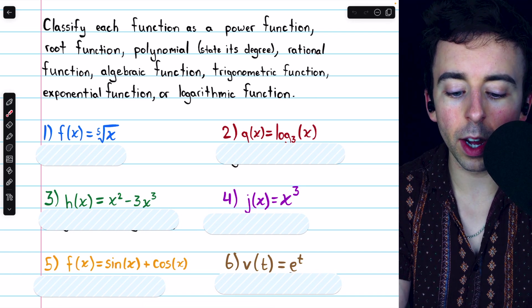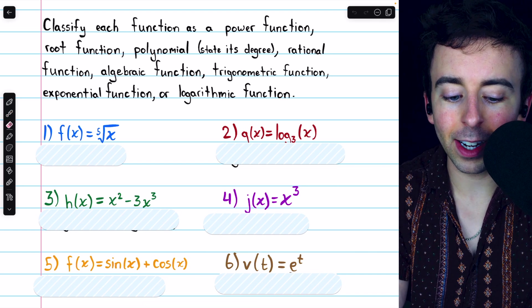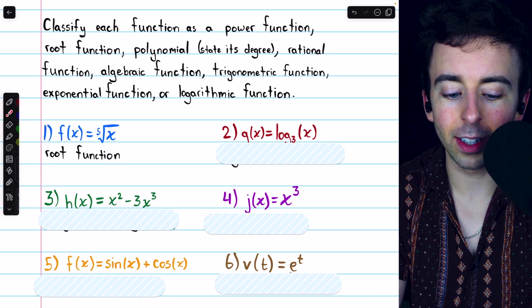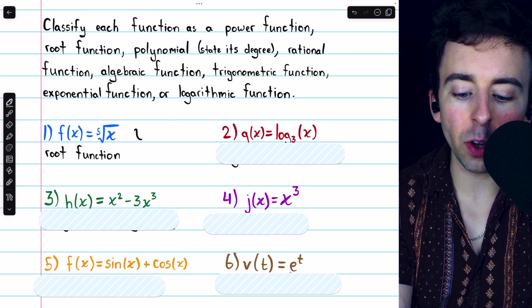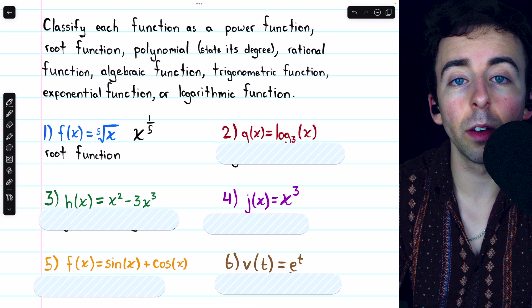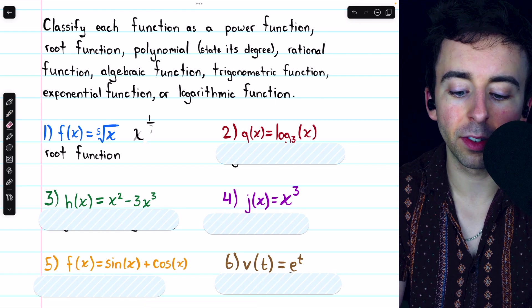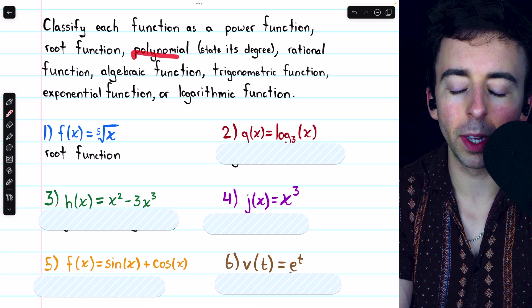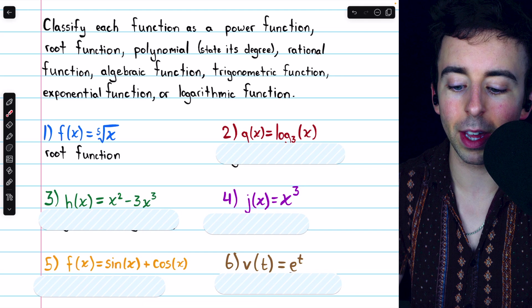Beginning with number one, f of x equals the fifth root of x. This is most simply recognized as a root function. It's the fifth root of x. Though we could also view it as a power function. It's x to the power of one over five. And a lot of these types of functions do have some overlap. For example, every polynomial is an algebraic function. And we'll see some examples as we go through this.